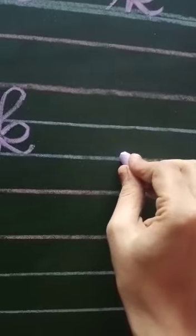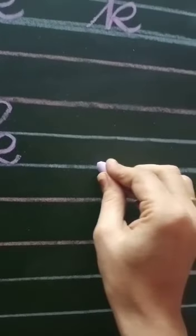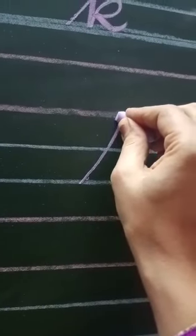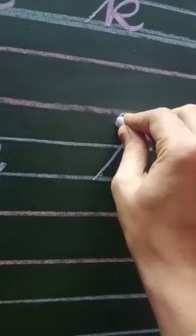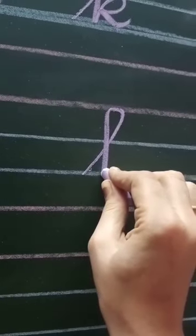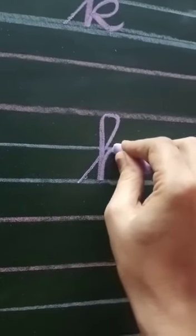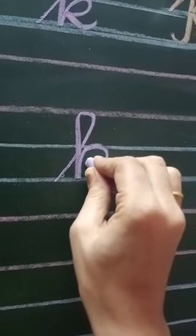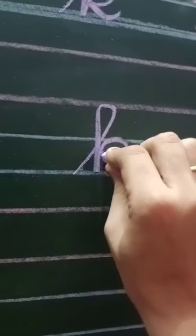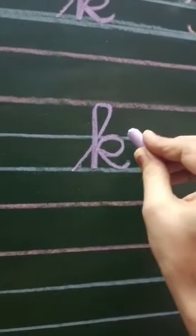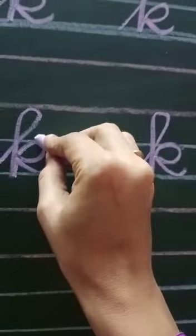Again, start from here. Go up in a slanting line, turn back, one. Then make a loop. Touch here and go down.